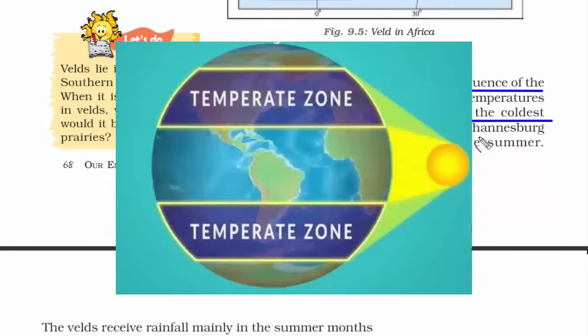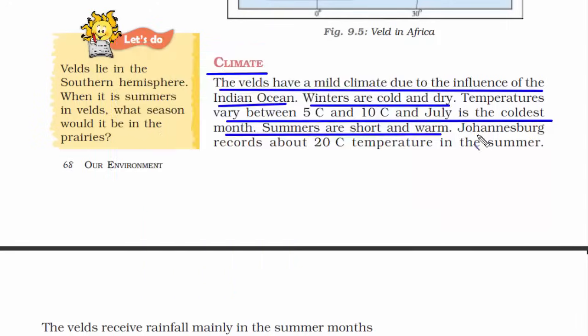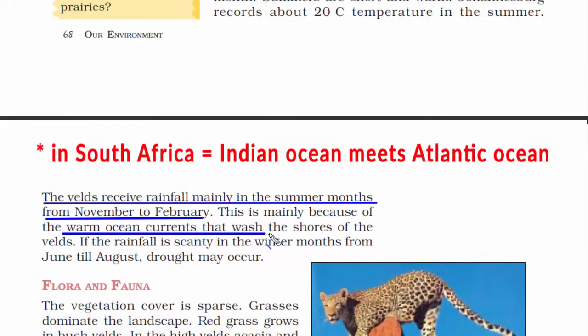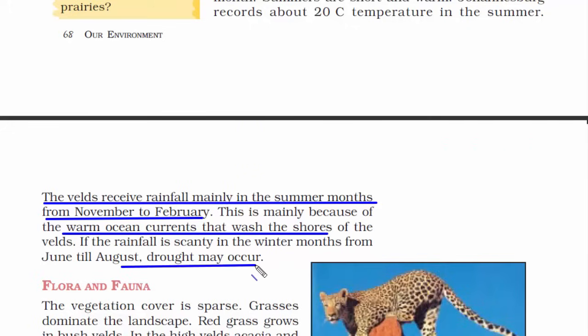The sun rays don't fall directly on the surface. Had it been at the equator, just like other African nations, it would have been super hot. Just look at the temperature of Johannesburg in summer — it's just 20 degrees Celsius, an awesome place for a holiday. They receive rainfall in the months of November and February because of the warm ocean currents that wash the shores of the velds. This place also has chances of drought. That was all about the climate of the velds.